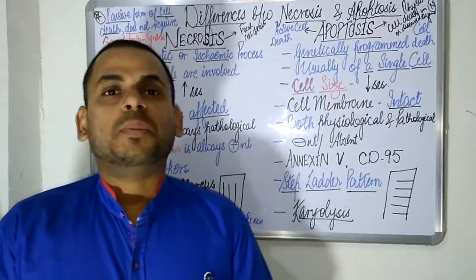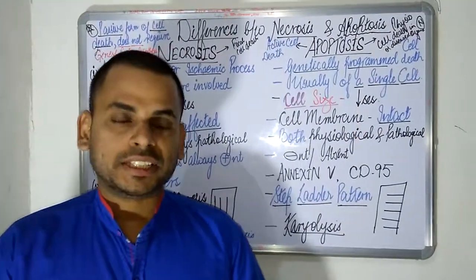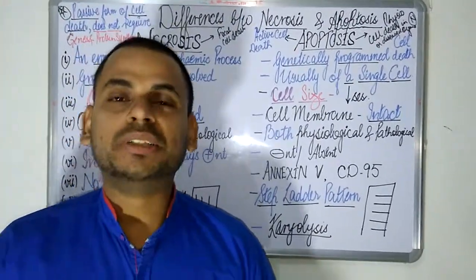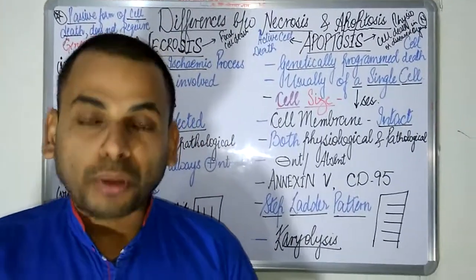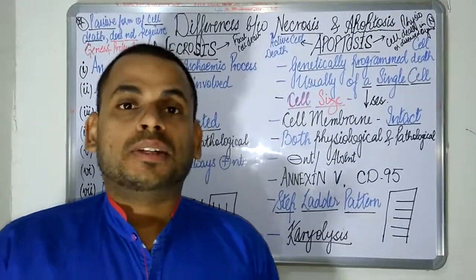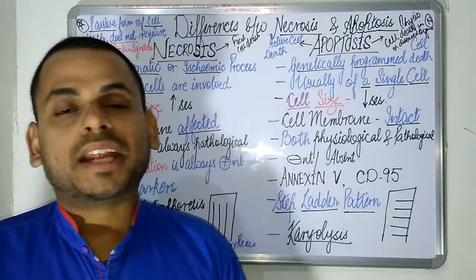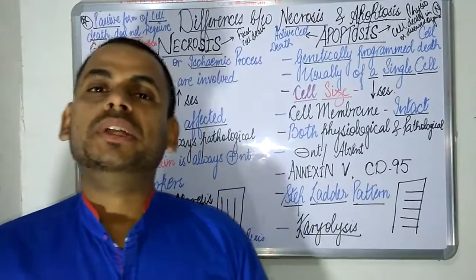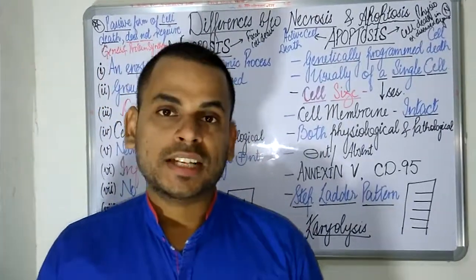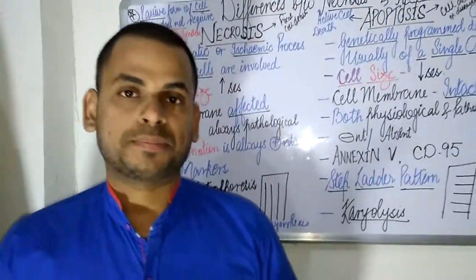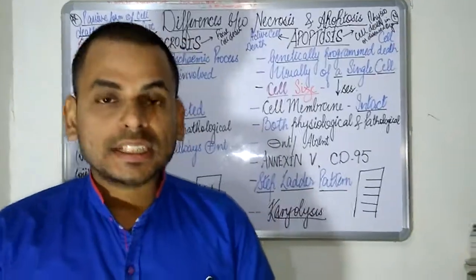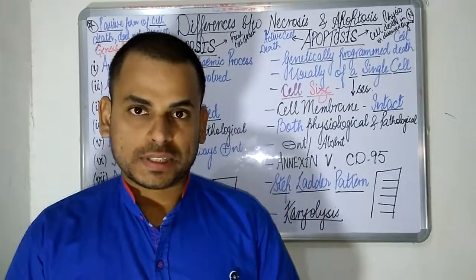Hello viewers, welcome to another lecture series. Today the topic of discussion will be about the important differences between necrosis and apoptosis. Cell death can be of two types: it can be either in the form of necrosis or in the form of apoptosis.